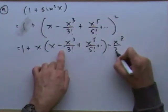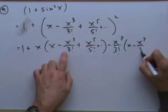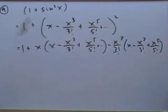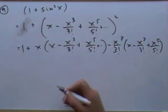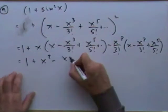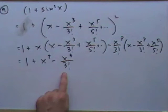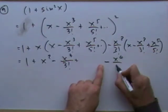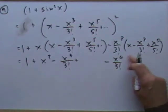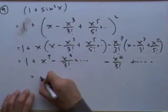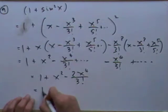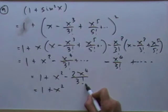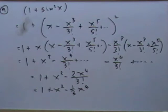Expanding: minus x³/3! times (x - x³/3! + ···) gives -x⁴/3! terms, and x⁵ produces at least x⁶ terms so I can stop there. I get 1 + x² - x⁴/3! — that's three good terms. The -x⁴/3! from the cross term has the same sign, giving 1 + x² - 2x⁴/3! = 1 + x² - x⁴/3, since the 2 cancels the factorial. So the first three terms are 1 + x² - ⅓x⁴.